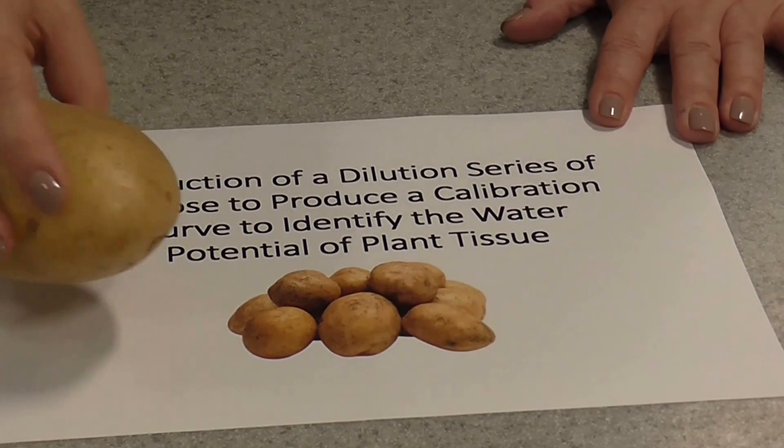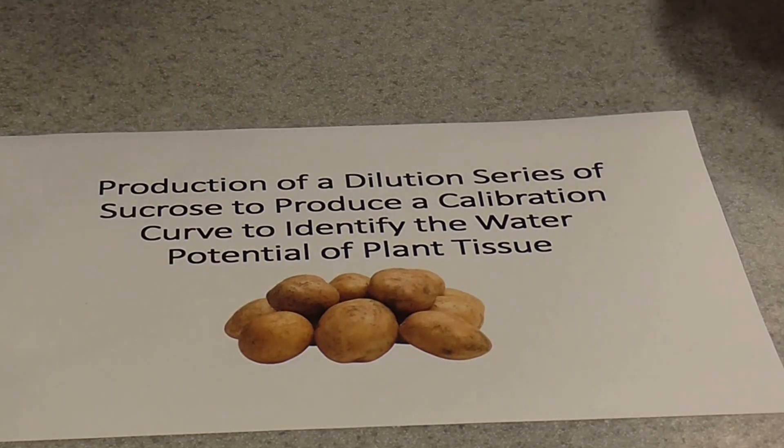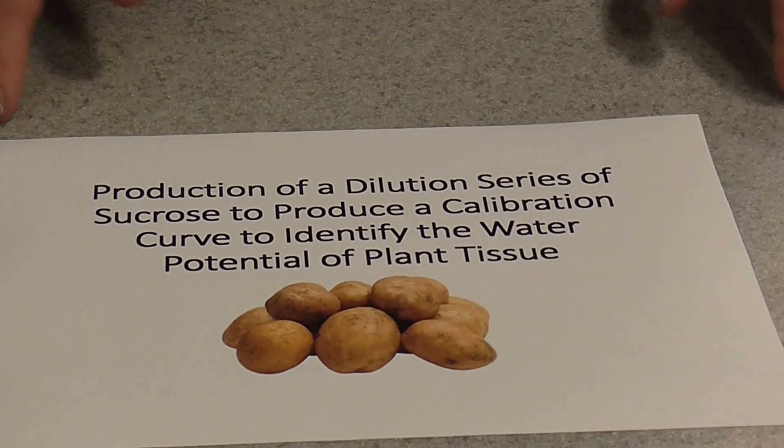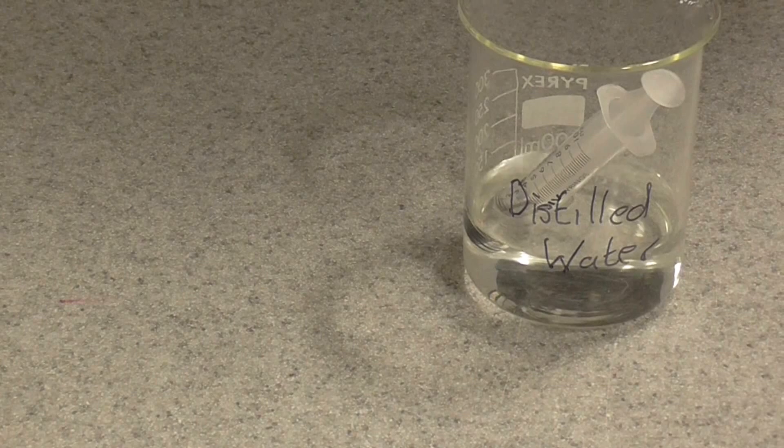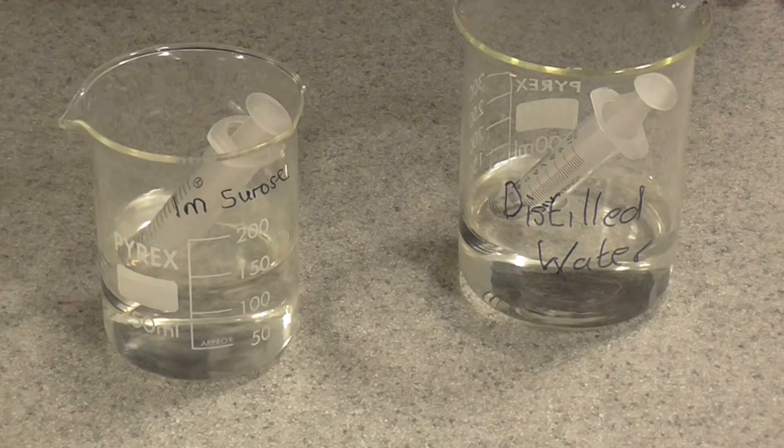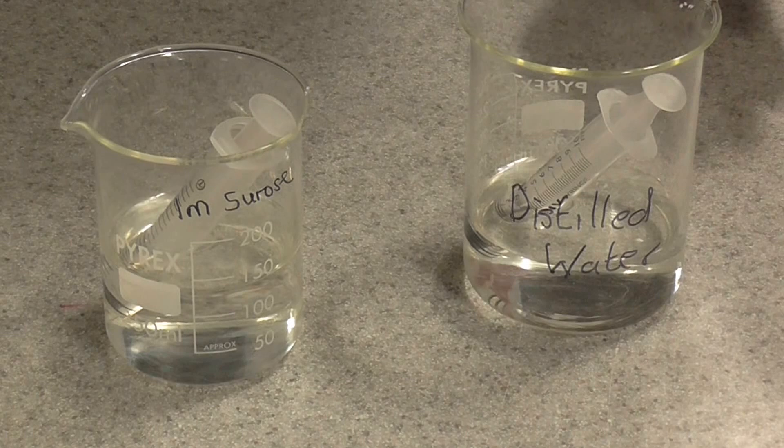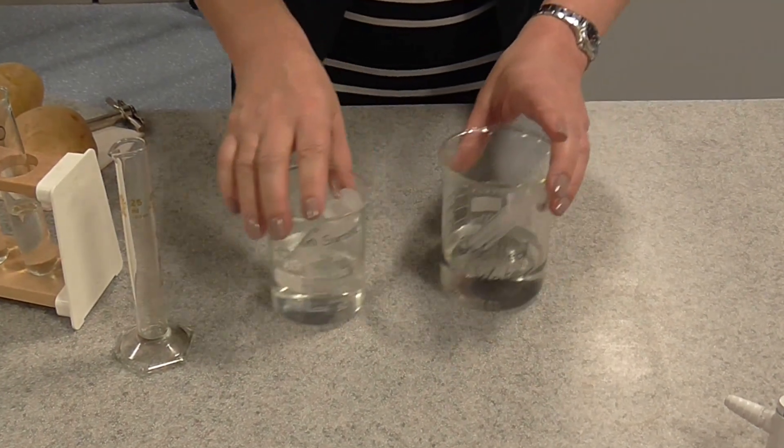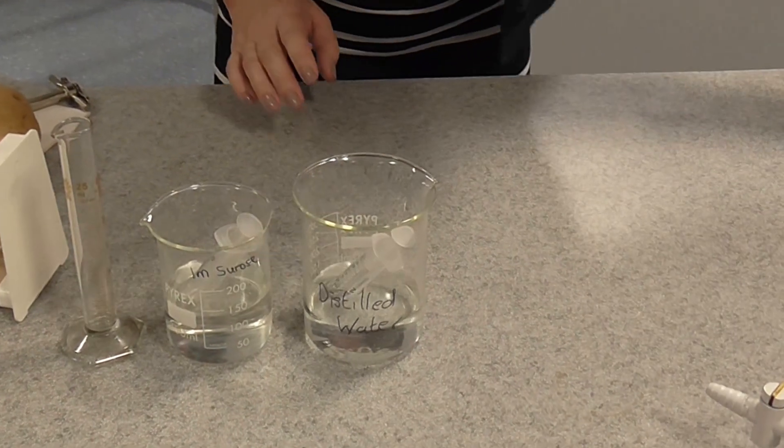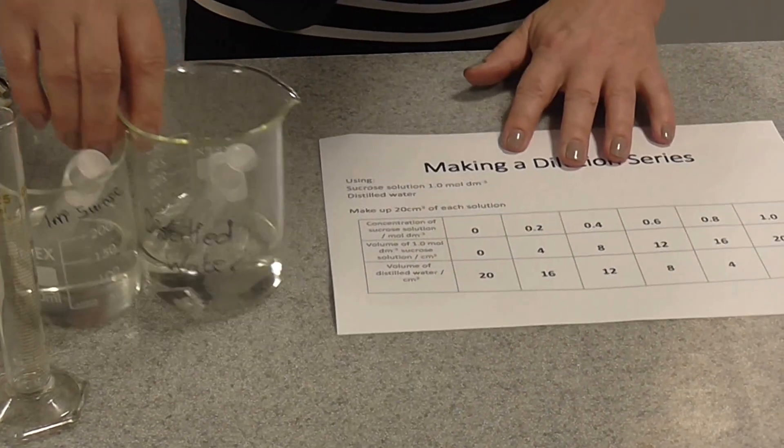The plant tissue we're going to use to do this is going to be potato. The first thing we need to do is actually make our dilution series. For this we need distilled water and we need a one mole per decimetre cubed sucrose solution which the technician has prepared. You can use measuring cylinders for this or you can use 10 centimetre cubed syringes. We're going to make up 20 centimetres cubed of each of a number of different solutions.